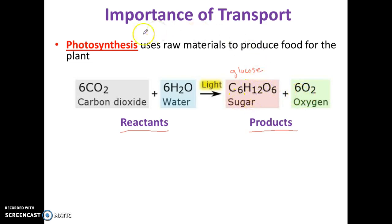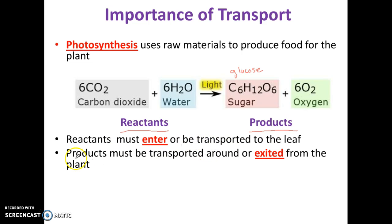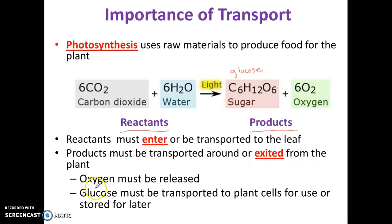The idea of transport in plants is: how are plants going to get that CO₂ from the atmosphere? How are plants going to get that water from the soil? And how are they going to get sunlight? What are they going to do with the sugar they make, or how do they release the oxygen they make? The reactants must enter or be transported through the leaves. Products must be transported around or exited from the plants. Oxygen must be released, and glucose must be transported to the plant cells for use or stored for later.